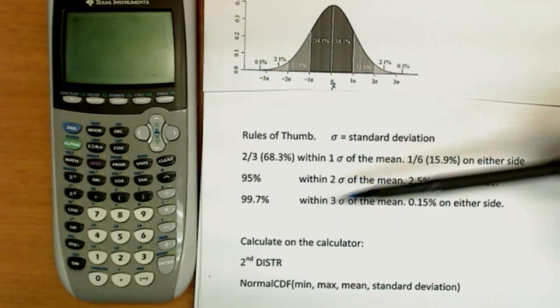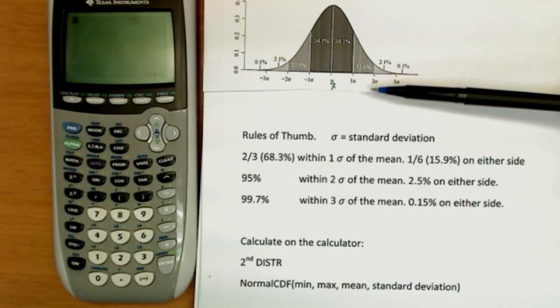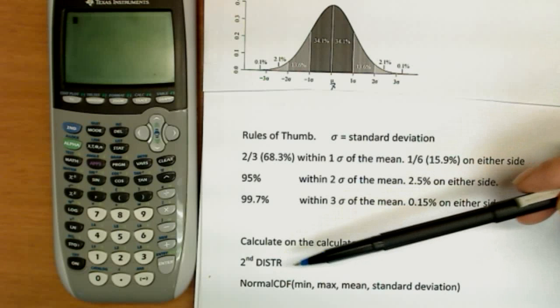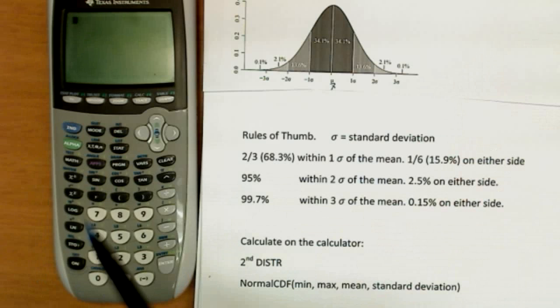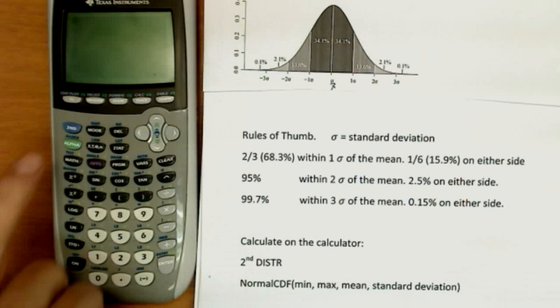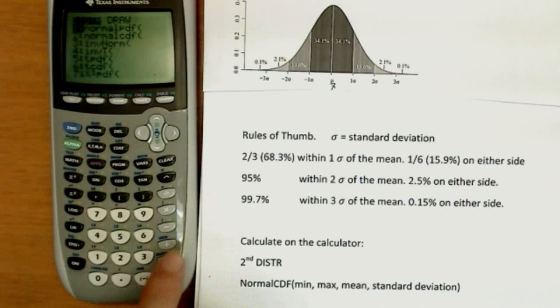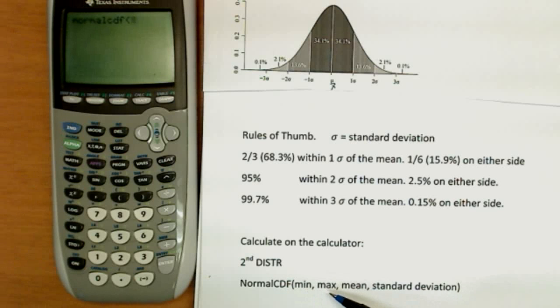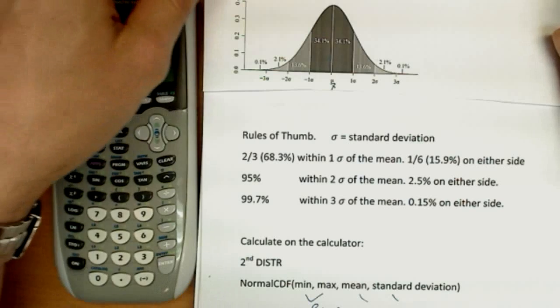Now not all problems in the world are going to fall precisely along those standard deviation lines. So we'll find a way to calculate it on our calculator. It's under second distribution, which is right above variables. And we're going to choose the normal CDF out of that list. Looks like this. Normal CDF is the second one down. And to use that calculation, we're going to put a min, a max. So this is the range of values that we're looking for. The range we want. And then the mean and standard deviation, those are given in the problem. We have to know those in order to know how our normal distribution is behaving. So let's see how this would all apply.